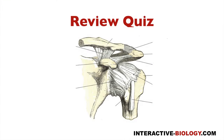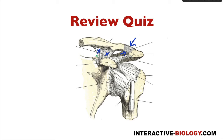Let's do our brief review quiz. We have the superior acromioclavicular ligament, the inferior acromioclavicular ligament, the trapezoid ligament, the coracoid ligament, and if you take them together — looks like a smiley face — that is the coracoclavicular ligament.